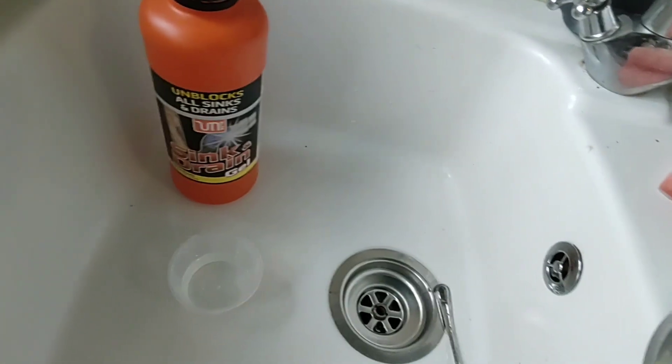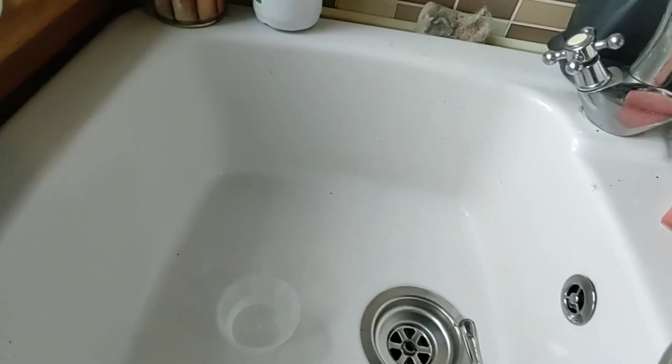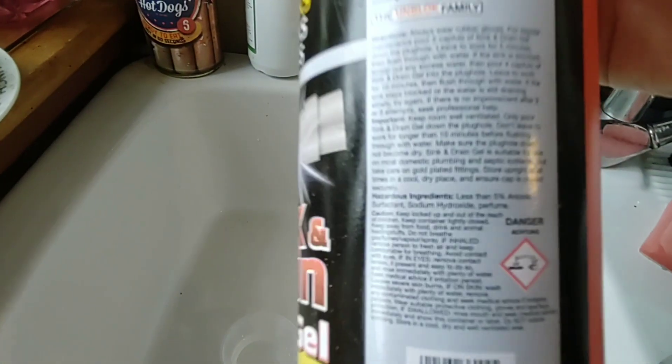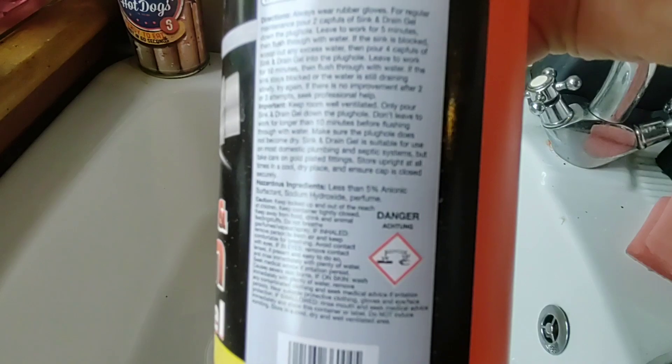Now we're going to strip the anodization to make them more silver. You can use kitchen cleaner or sodium hydroxide or oven cleaner because they all contain sodium hydroxide.